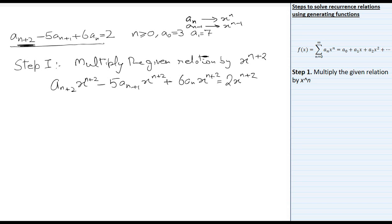After multiplying, we have an infinite number of terms and we are multiplying each term according to its subscript — multiplying a₃ with x³, a₄ with x⁴, and so on, aₙ₊₂ with x^(n+2). Now we need to sum up all these relations.